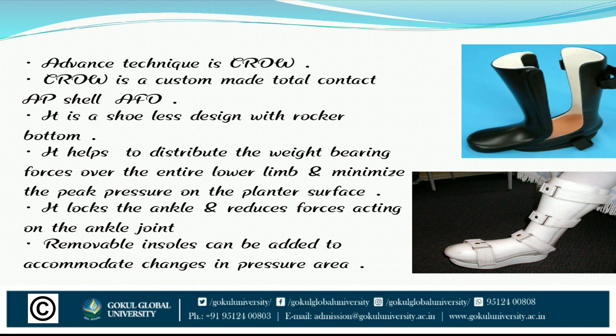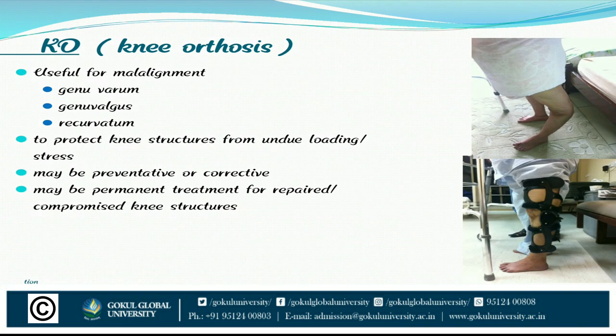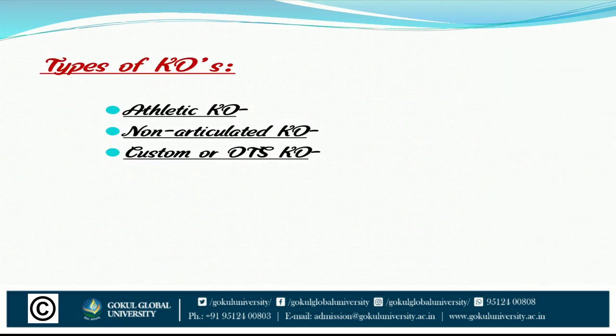Knee orthosis is useful for malalignment: genu varum, genu valgum, and recurvatum — to protect the knee surface from undue loading stress. It may be preventive or corrective, and may be permanent treatment for compromised knee structure. Types of knee orthosis: athletic knee orthosis, non-articulated knee orthosis, and custom-made orthosis.